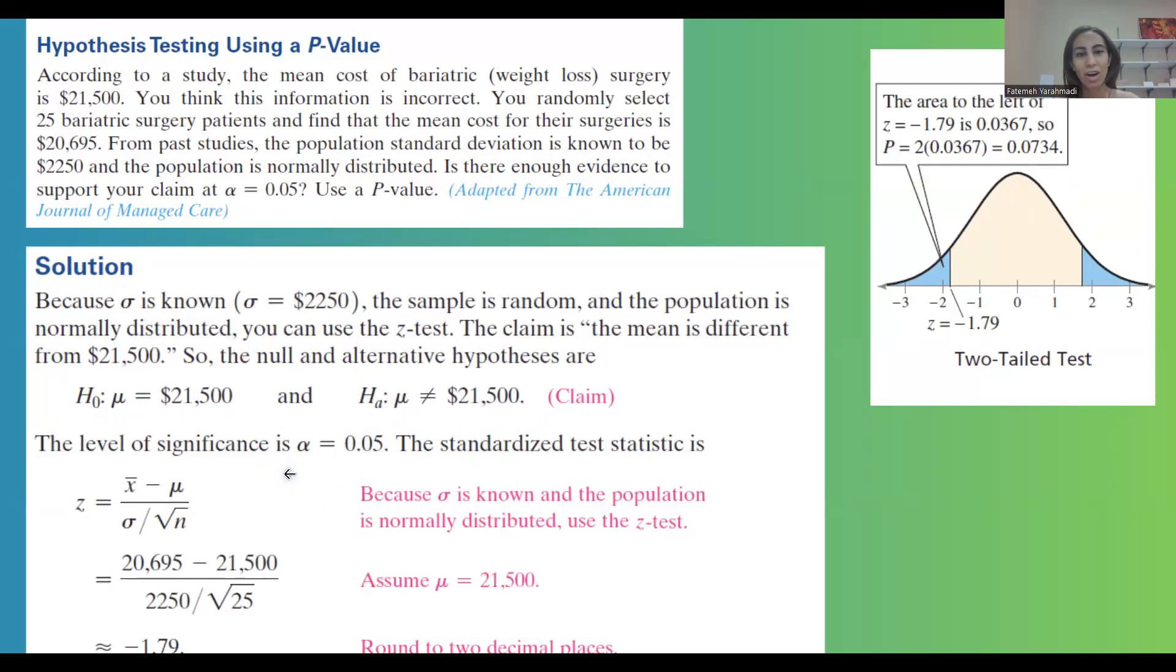The level of significance is 5% and Z is equal to X bar minus mu divided by sigma over square root of n. So we can basically punch these numbers into the formula and calculate the Z value.